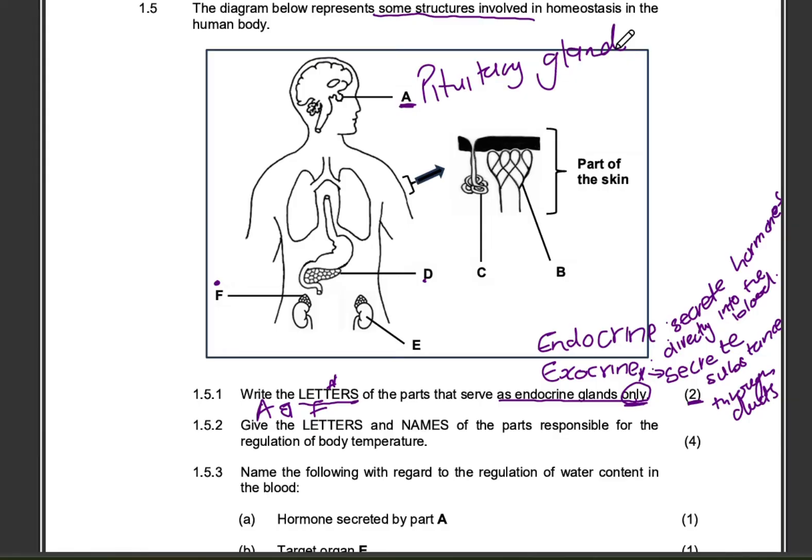Then, F is our adrenal gland, which will secrete two hormones. The adrenaline hormone and the aldosterone hormone. Those are the two hormones.